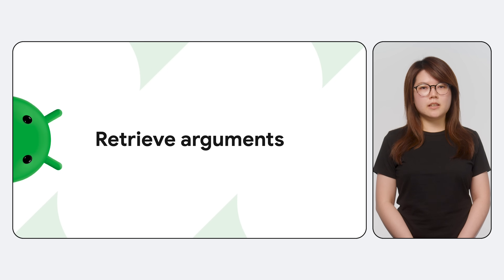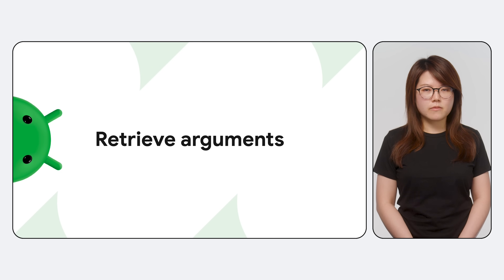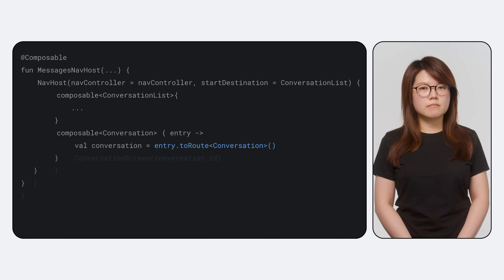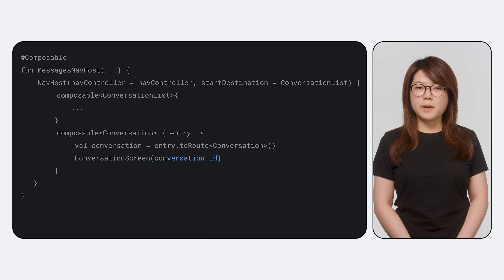Next, how do we retrieve and use the nav arguments that were passed in? To support type safety, we added a new extension function for NavBackstackEntry called toRoute, which returns the route instance that was used to navigate with. For example, in our conversation destination, we take the nav backstack entry provided by the composable's content lambda and call toRoute on it. Then we can use this restored object just like any other Kotlin object — we can call conversation.id to read the id that was passed in.